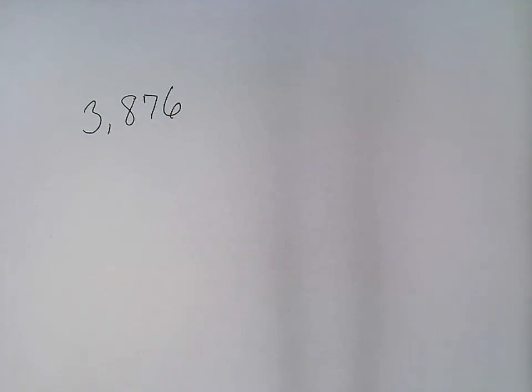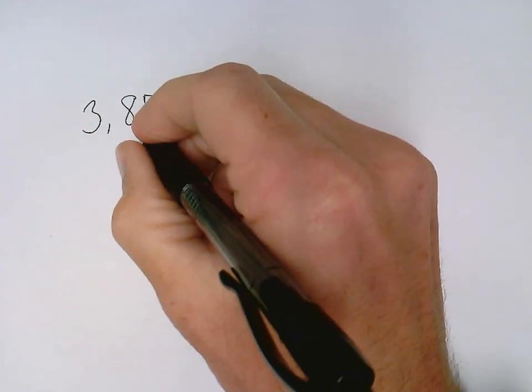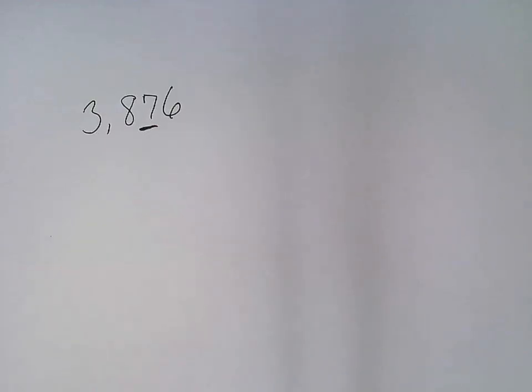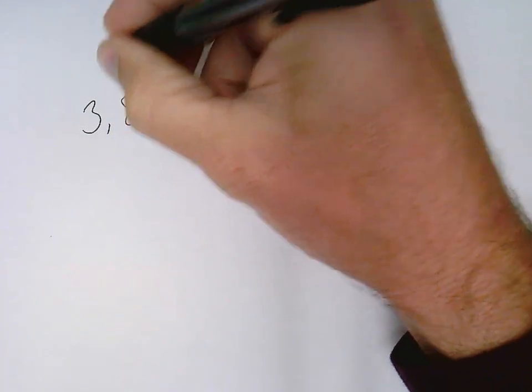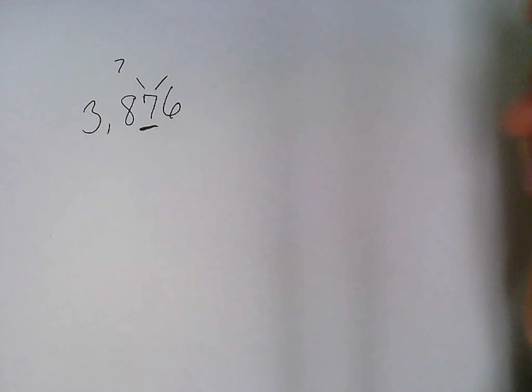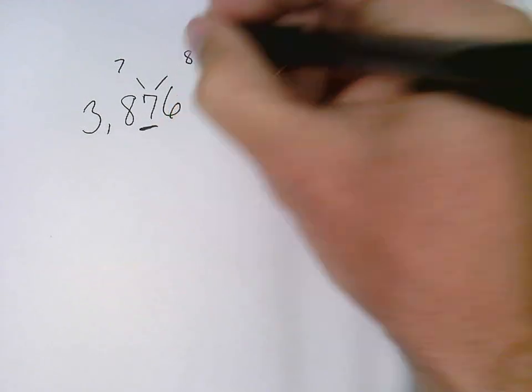We are going to round 3876 to the nearest ten. To do that, I'm going to underline the tens place, and that tens place digit is either going to stay the same, or that ten place digit is going to go up by one.